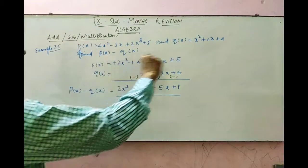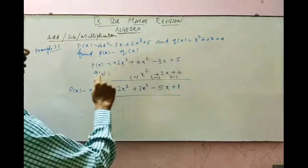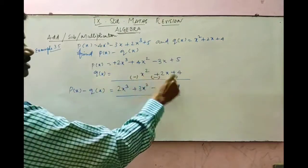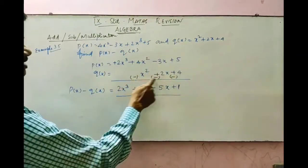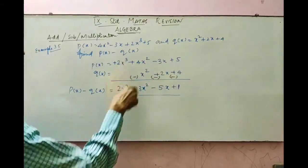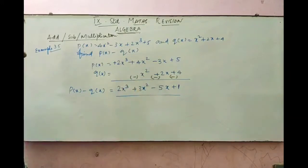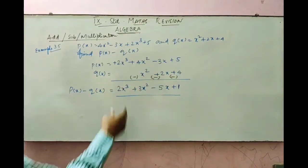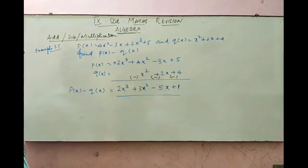To summarize: first arrange the first polynomial, then arrange the second polynomial. Change the sign of the second polynomial. Then add or subtract depending on the resulting signs — same sign means add and keep that sign; different sign means subtract and put the greater number's sign.